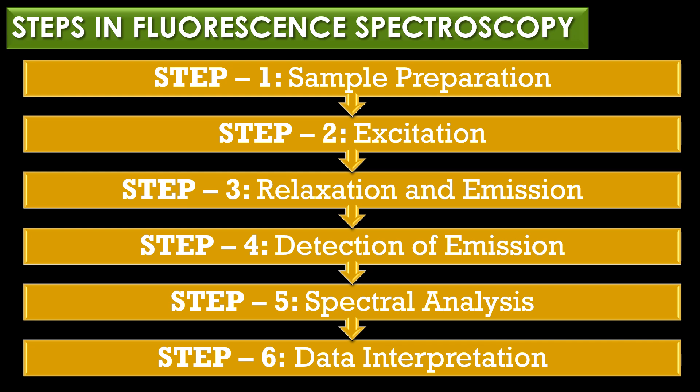The sixth and final step is data interpretation. The fluorescence data is processed and interpreted based on the fluorescence intensity, emission wavelength, and spectral shifts. This analysis can reveal important details about the sample, such as molecular binding, structural changes, and interactions with other molecules.